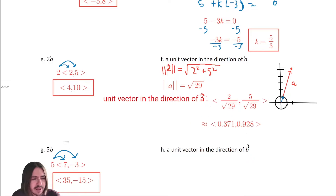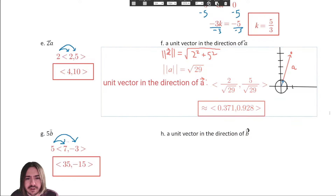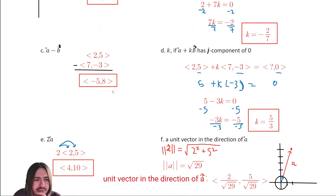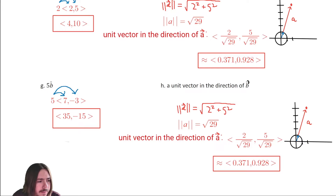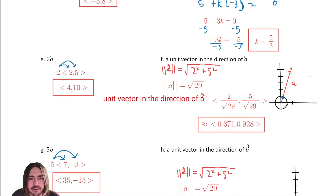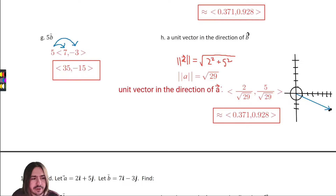For letter H, same process but finding the unit vector in the direction of B instead of A. Vector B was seven comma negative three. Sketching it: seven to the right and three down, with the terminal point there. The unit vector is the shorter vector pointing in that same direction from the origin.